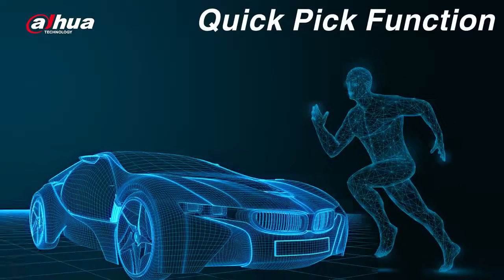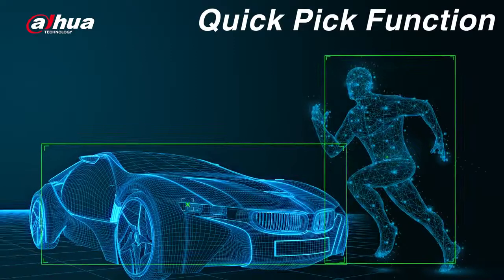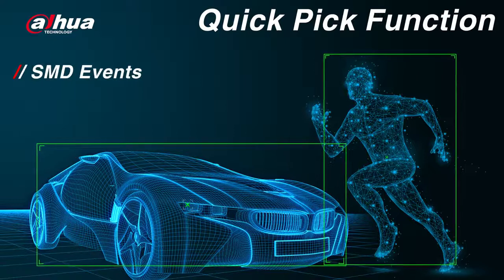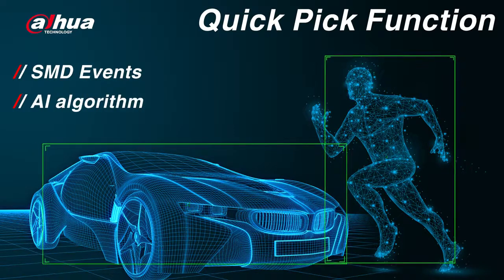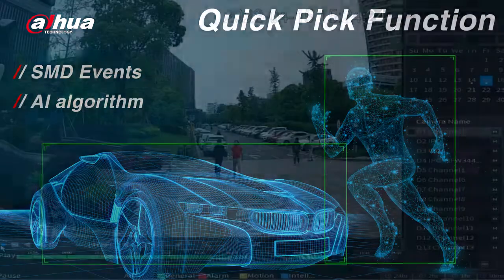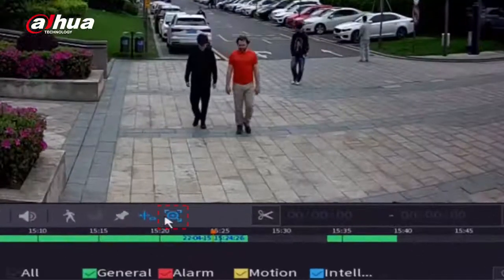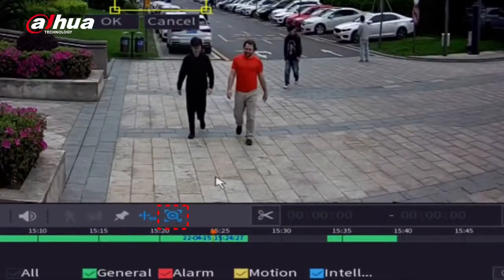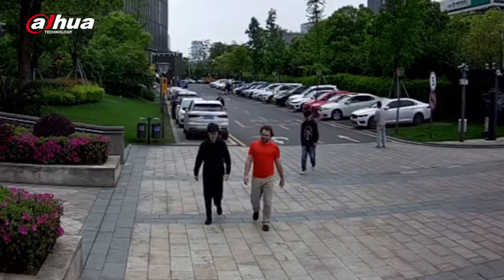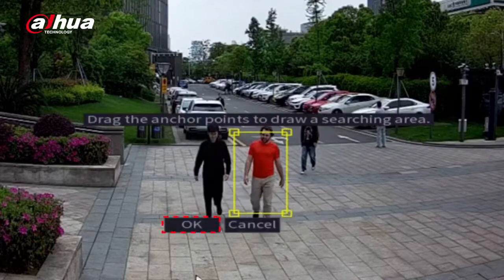The Quick Pick function allows you to quickly retrieve human or vehicle targets from SMD events using an AI algorithm of color extraction and comparison. Let's take a look at the Quick Pick function. Click the Quick Pick button, then drag the anchor points to select a searching area and click the OK button.